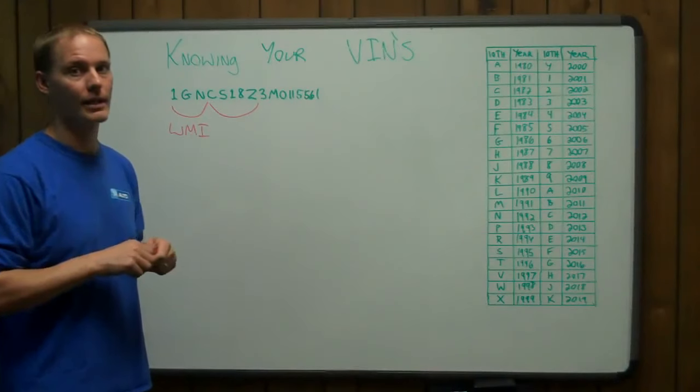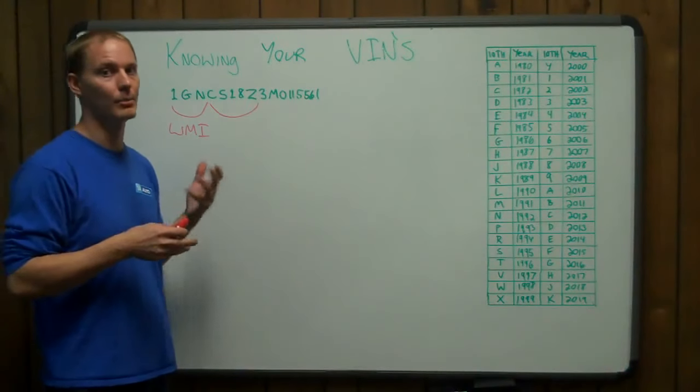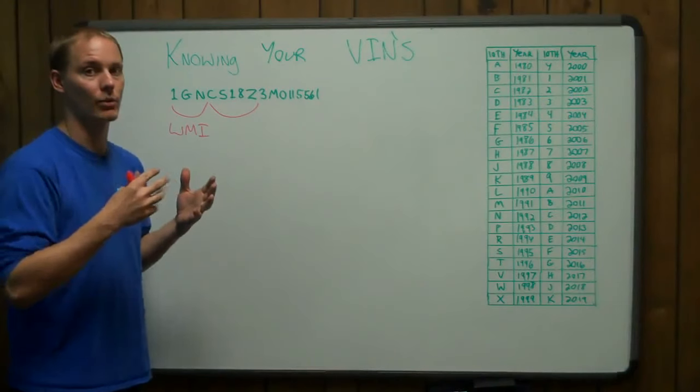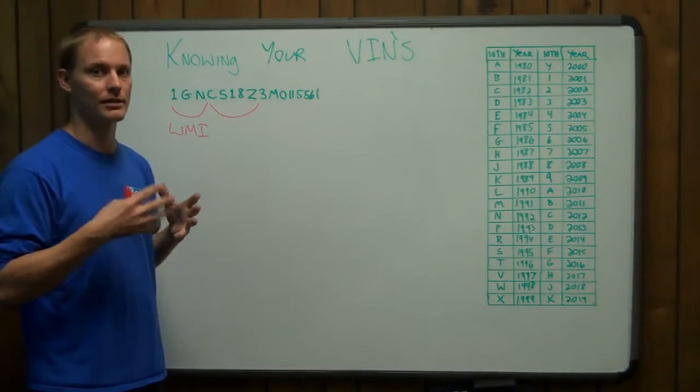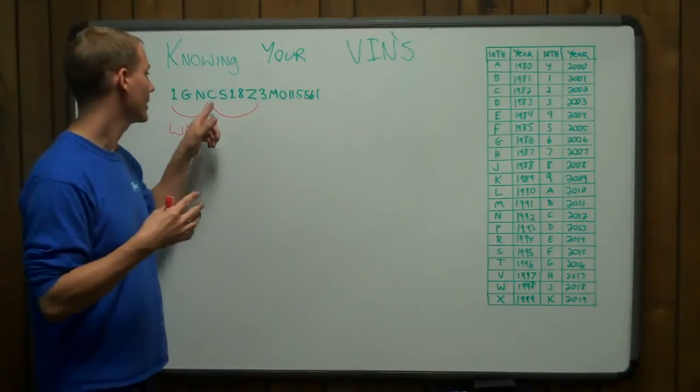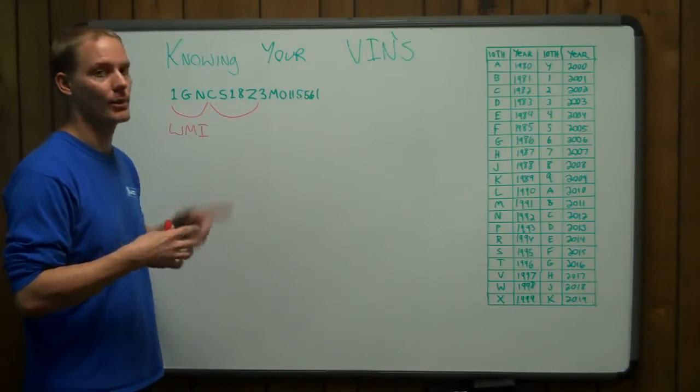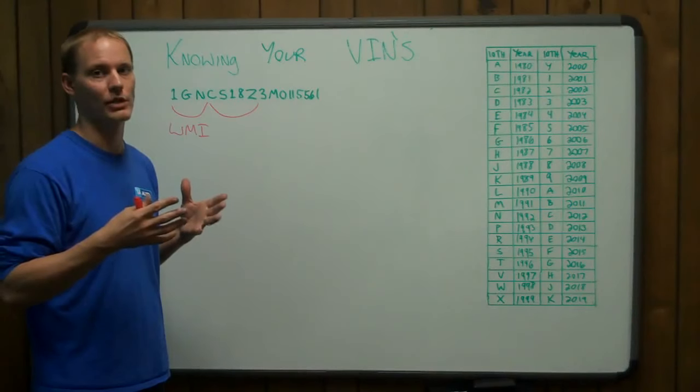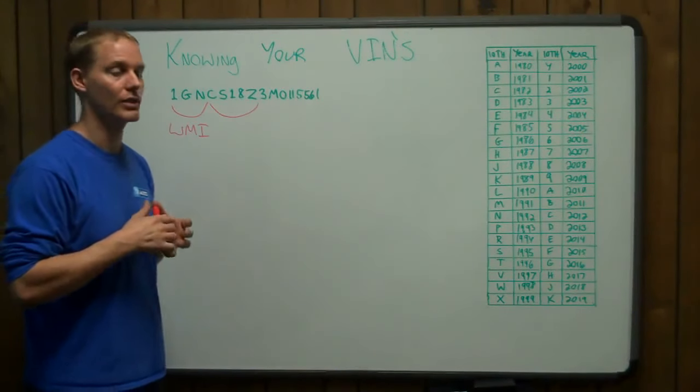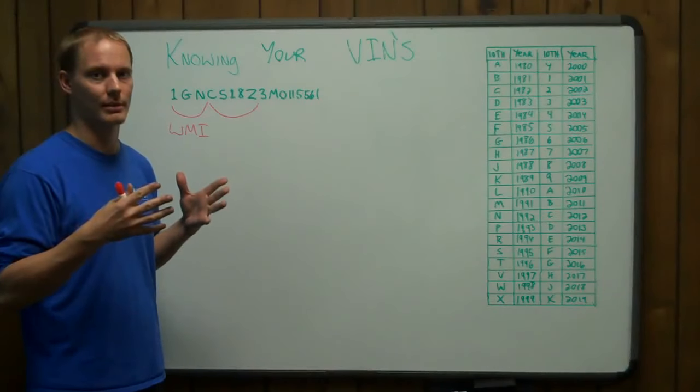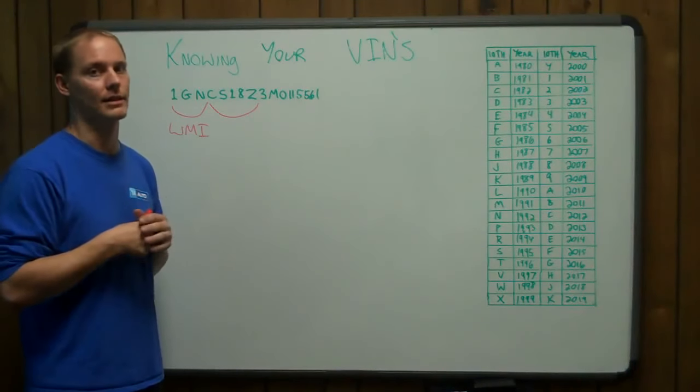So in this case, the fourth digit is safety, braking, and suspension. So if you have a heavy-duty truck with eight lug wheels and something real serious, towing package, that sort of thing, this is the digit that will tell you, hey, this vehicle has a special suspension and braking package. It also does things for safety. So if you had a special safety restraint system in the car for some reason, that is the digit that would tell you.